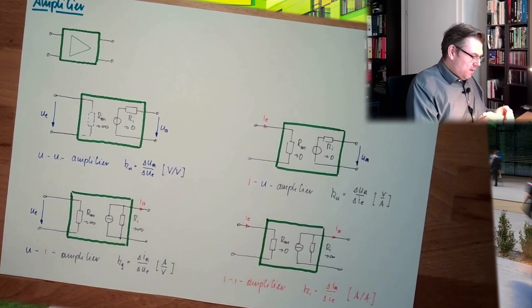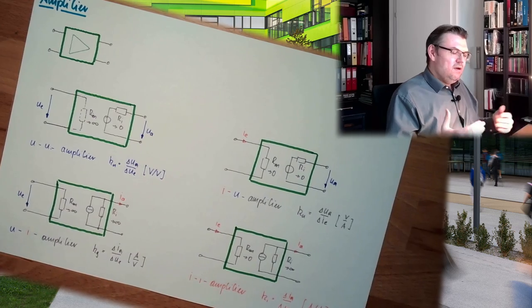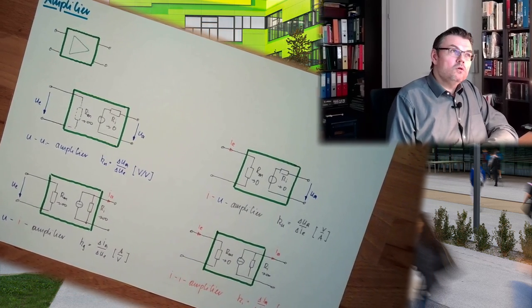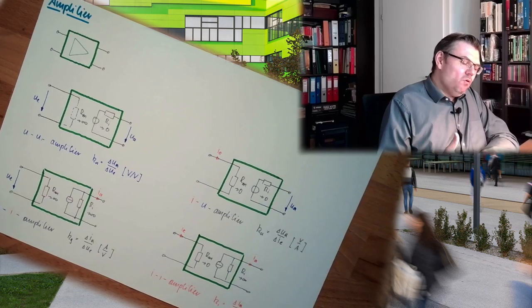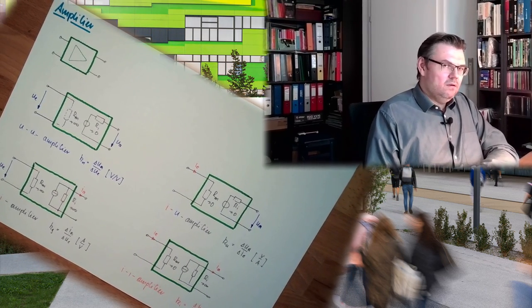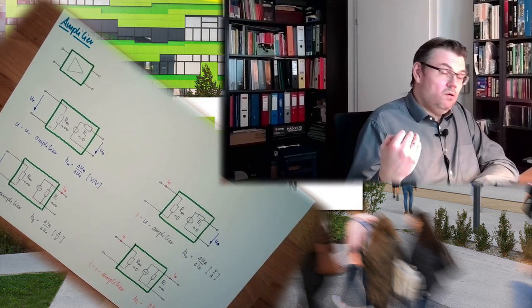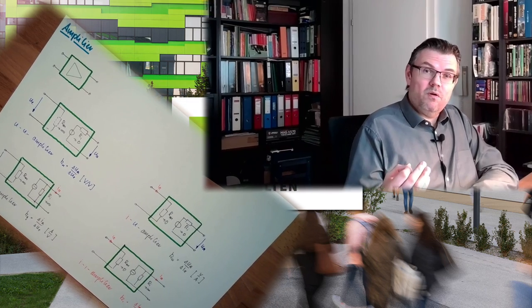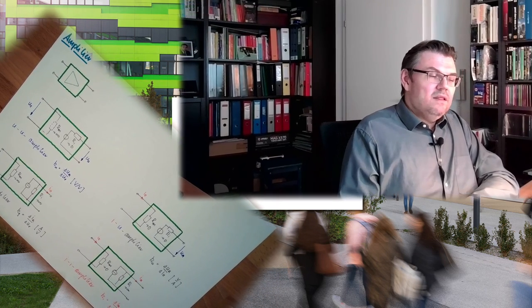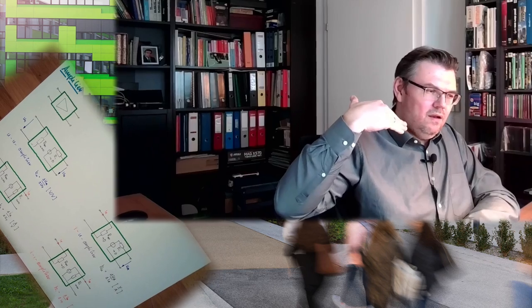Because what I want from a signal is that it is not changing regardless if I connect, I don't know, a PLC and measure another measurement device, a display device or something like this. And if I connect many of them I want that the output signals of the amplifier stay constant.